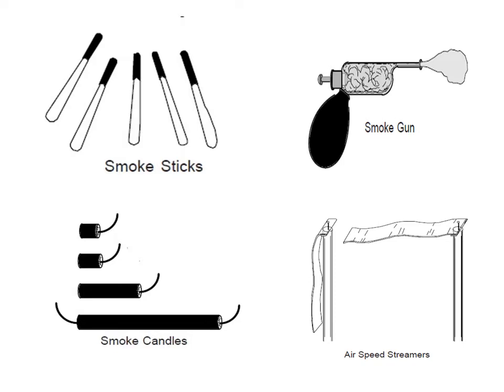As soon as the air comes inside the greenhouse, it will create waves in the smoke. As soon as those waves are created, we can very well identify that the leakage is at that particular place. To create the smoke, we use these instruments.